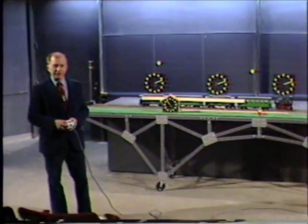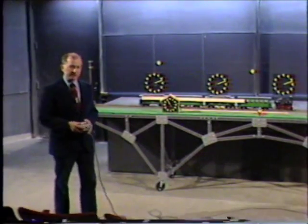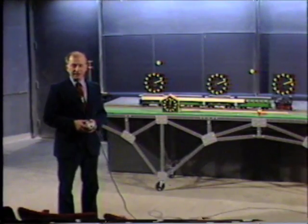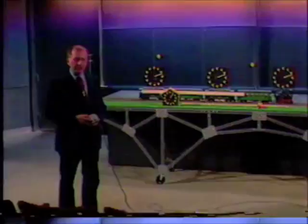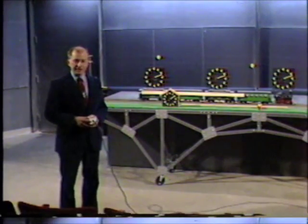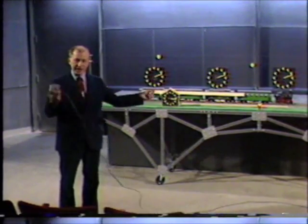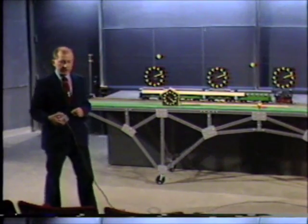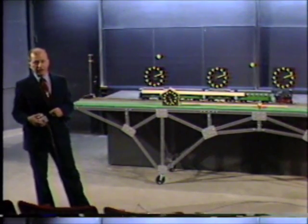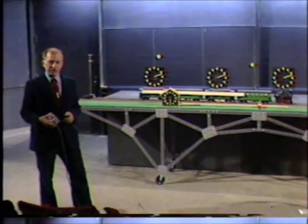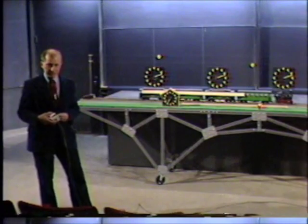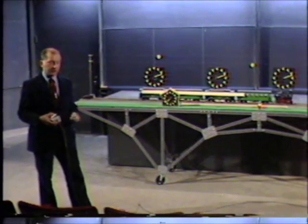Einstein, in his 1905 paper on special relativity, introduced two seemingly innocent postulates. One: the velocity of light is the same in all inertial frames, and in particular is the same in both directions. By an inertial frame, we mean any frame which is at rest relative to the fixed stars, or moving at a uniform velocity with respect to another inertial frame.